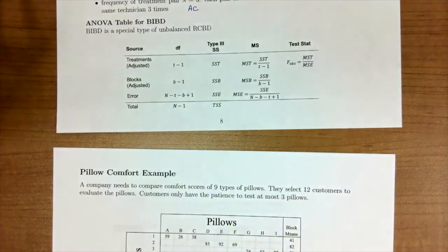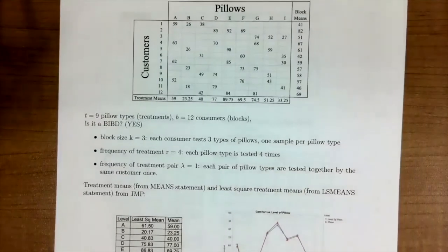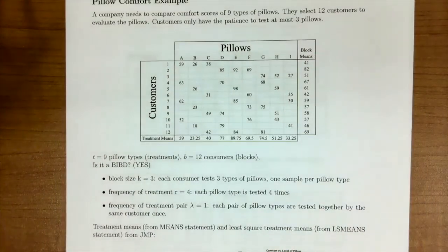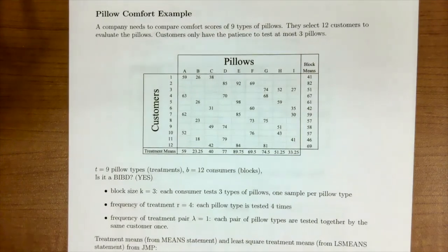Now let's go to a different example to continue to extend our understanding of a balanced incomplete block design. In this case, we have pillow comfort. A company needs to compare comfort scores of nine types of pillows. They select 12 customers to evaluate the pillows. Customers have the patience to test at most three pillows.